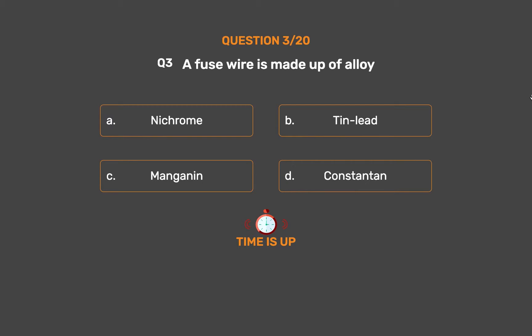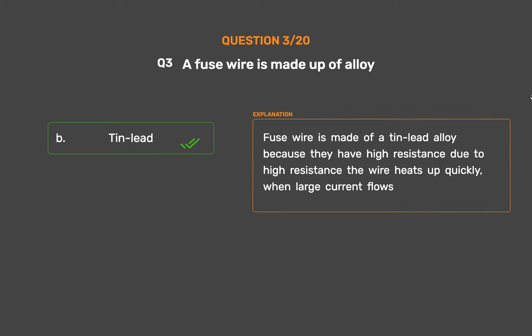The correct answer is Option B: Tin-lead. Fuse wire is made of a tin-lead alloy because they have high resistance. Due to high resistance, the wire heats up quickly when large current flows.